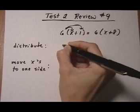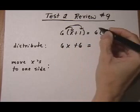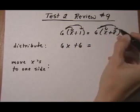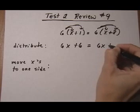So we distribute the 6. We get 6x plus 6 equals 6x plus 48.